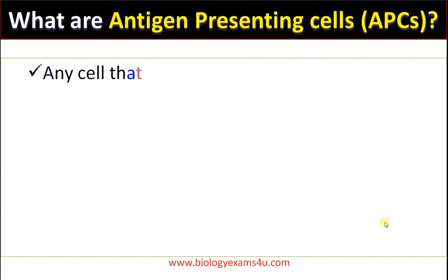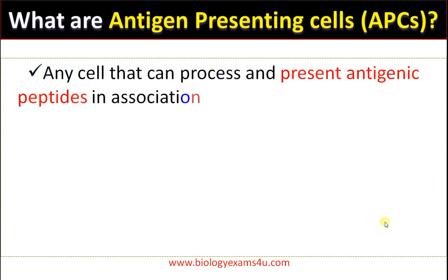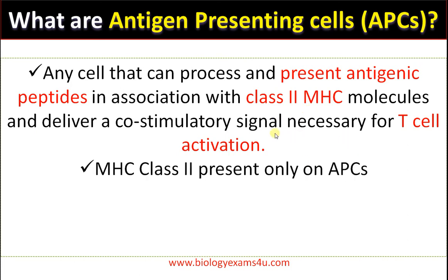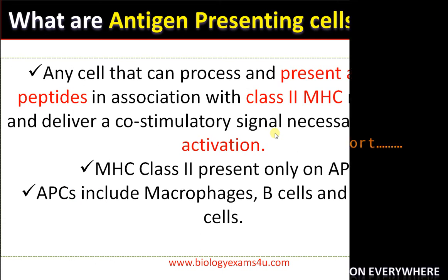And this is how a B cell acts as an antigen presenting cell. To summarize the definition: an antigen presenting cell is a cell that processes and presents antigenic peptides on MHC class 2 molecules — that is the speciality of APCs — and that activates T helper cells, thereby enhancing the immune response. MHC class 2 is present only on APCs, whereas MHC class 1 is present on all nucleated cells. Hope you got the concept, and you are with biologyexamsforyou.com — thank you so much for your support.